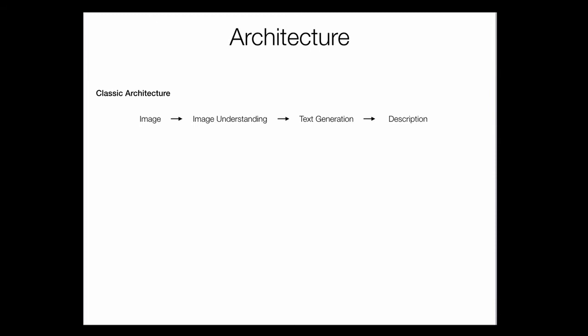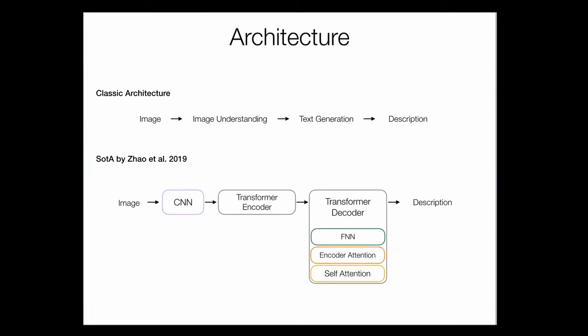The classic architecture of these models receives an image as input, passes it through an image understanding module, and feeds that to a text generation module which generates a natural language description. The hope was that powerful object detection modules, computer vision algorithms, and transformer-based state-of-the-art generation techniques — with millions of parameters and large datasets — could learn these patterns. But that was not true, and the whole point of the workshop was that these problems remain unsolved.